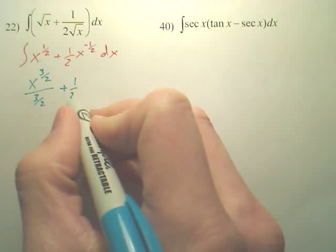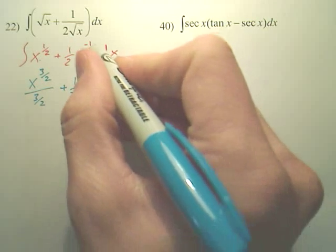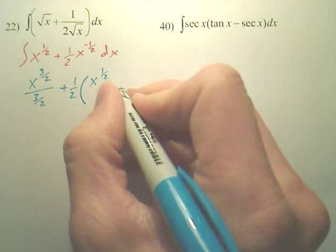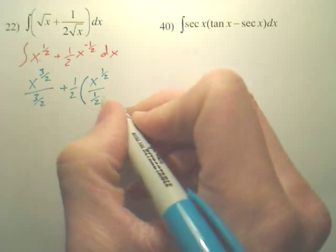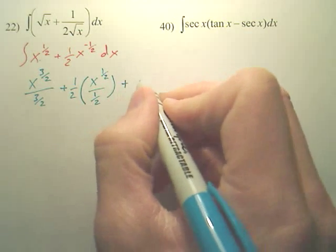Plus, leave the one-half out front. When you add one to this, you get positive one-half divided by one-half, and don't forget, plus c.